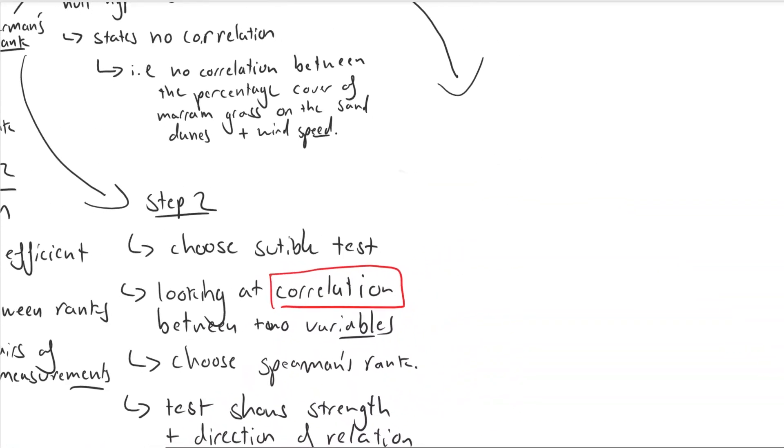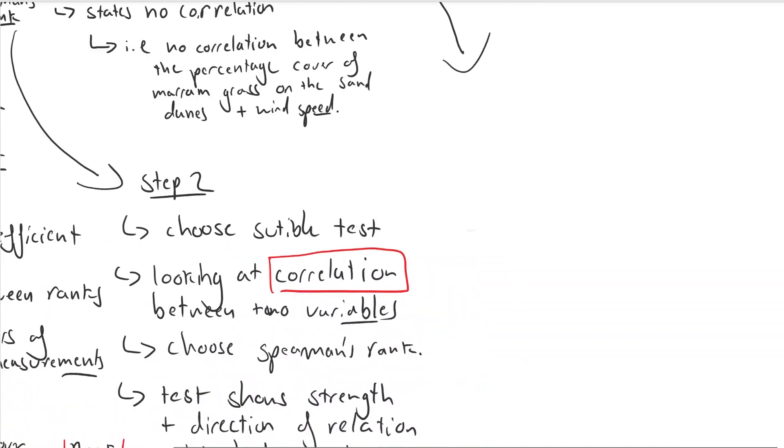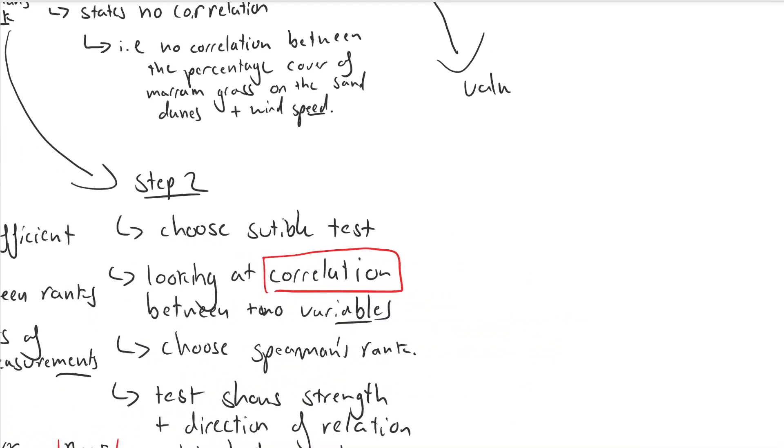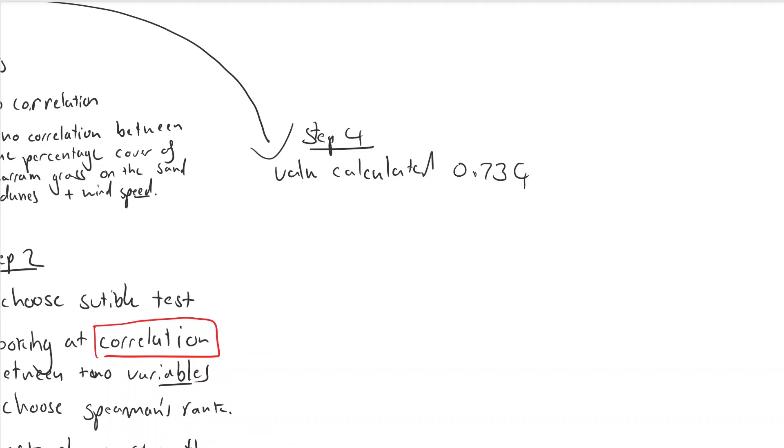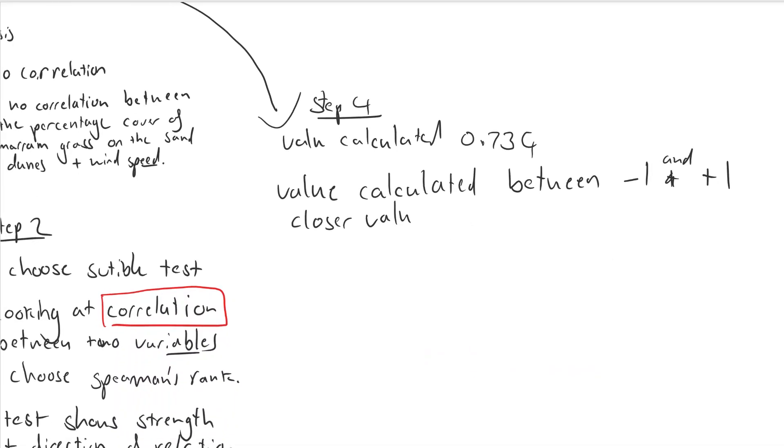Then you do the one minus the calculation. So you've now got the test statistic and let's say the value calculated was 0.734. The calculated value is going to be between minus one which is a perfect negative correlation and plus one which is a perfect positive correlation. The closer the value to zero the weaker the correlation between them.